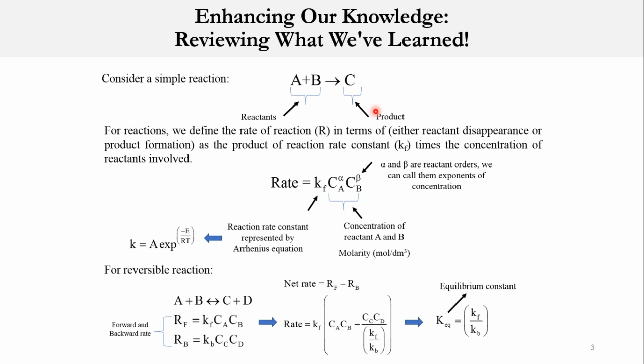We can write rate of reaction either in terms of reactants, for which we will say rate of disappearance, or in terms of products, for which we will say rate of formation. Accordingly, we say rate is equal to the rate constant times concentration of the species raised to power their orders or individual orders. That K is the reaction rate constant which is represented by the Arrhenius equation: K = A exp(-E/RT), where A is the frequency factor or pre-exponential factor.